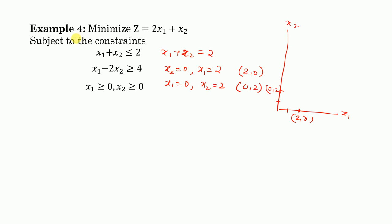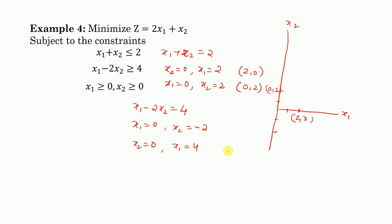The second line is x1 - 2x2 = 4. Putting x1 = 0 gives x2 = -2, so one point is (0, -2), which is in the negative x2 direction. Putting x2 = 0 gives x1 = 4, so the other point is (4, 0).